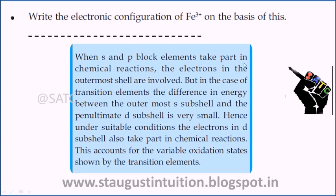When S and P block elements take part in chemical reactions, the electrons in the outermost shell are involved. But in the case of transition elements, the difference in energy between the outermost S sub-shell and the penultimate D sub-shell is very small. Hence, under suitable conditions, the electrons in the D sub-shell also take part in chemical reactions. This accounts for the variable oxidation state shown by the transition elements.